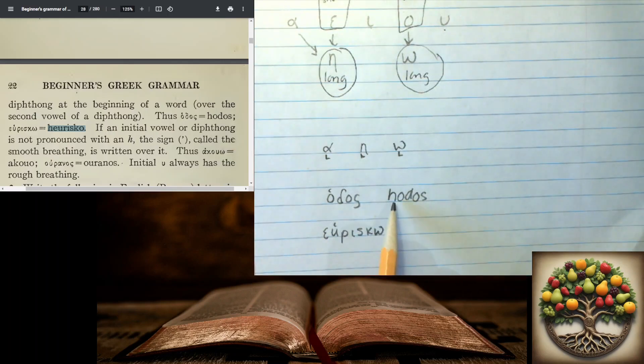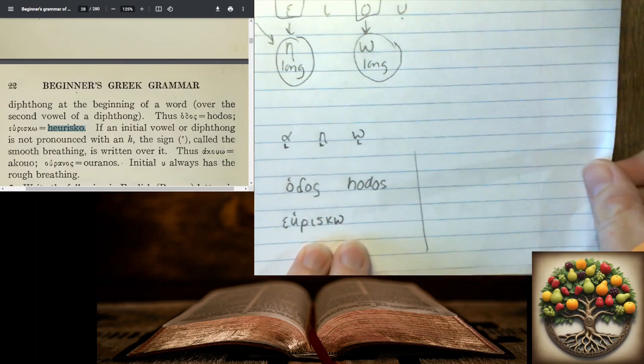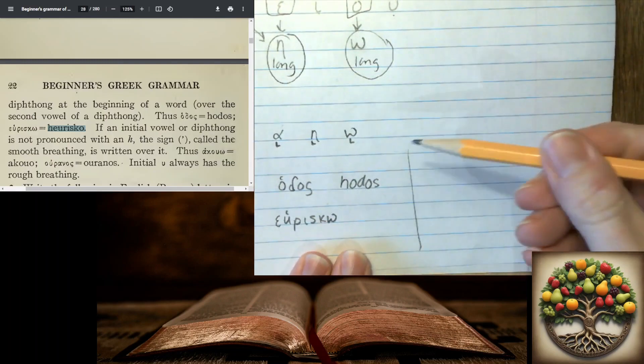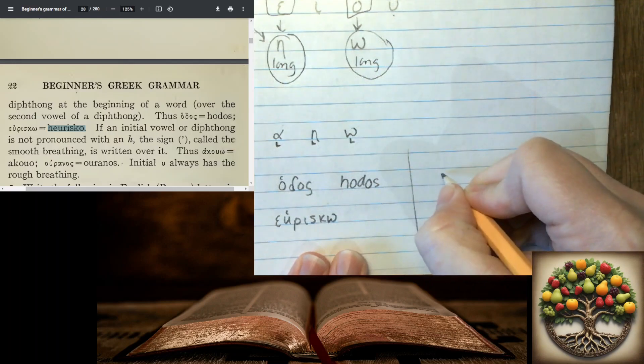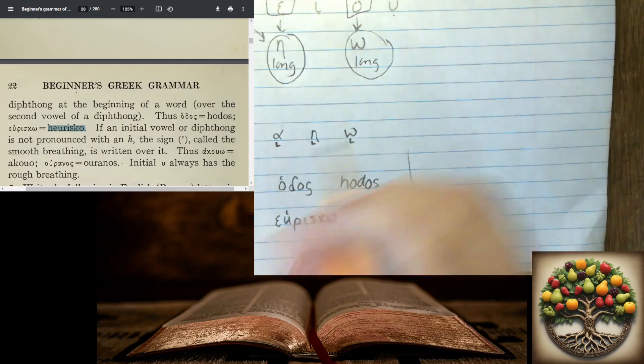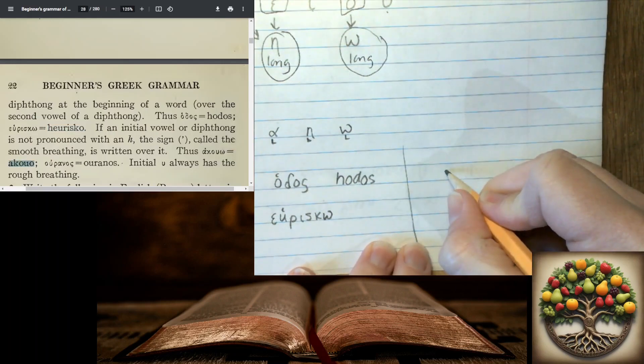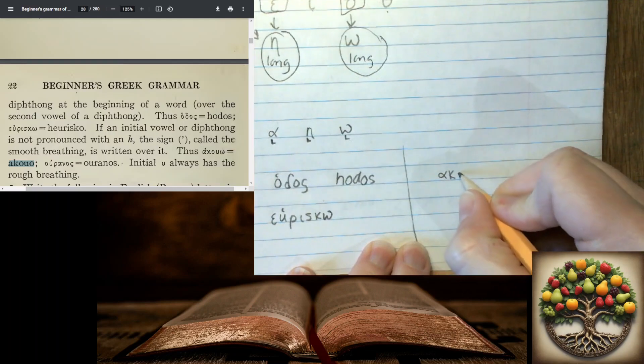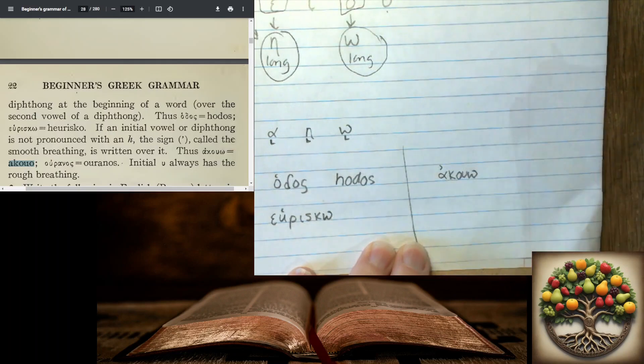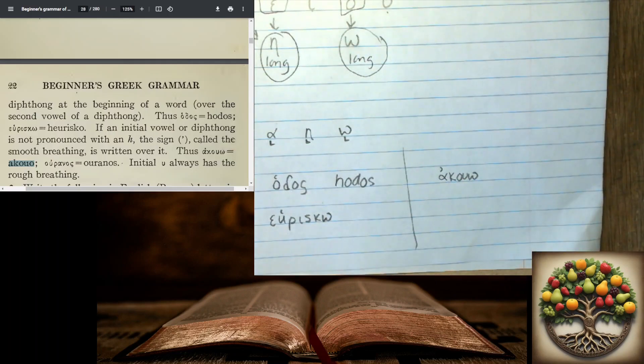And if we don't want to include the H sound, it's going to be called a smooth breathing. And that one's going to go that way. And we have this word, akuo, here. That's the smooth breathing.